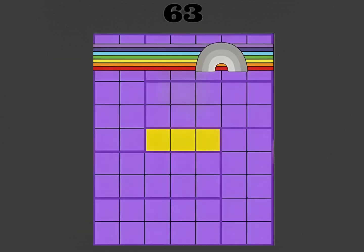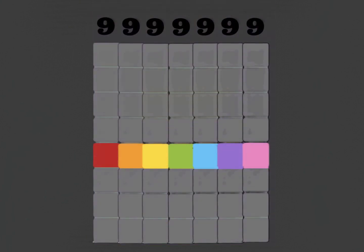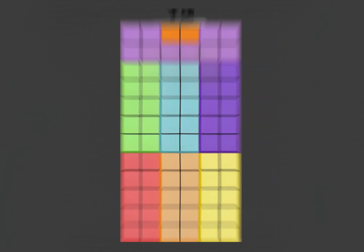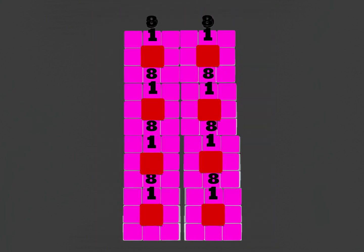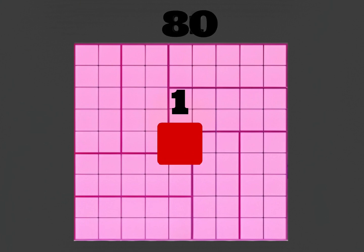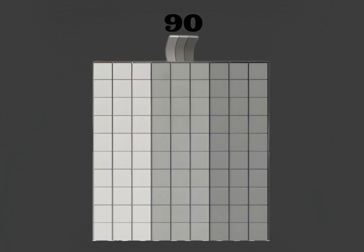Seven times nine is sixty-three. Eight times nine is seventy-two. Nine times nine is eighty-one. And finally, the last in line. Ten times nine is ninety.